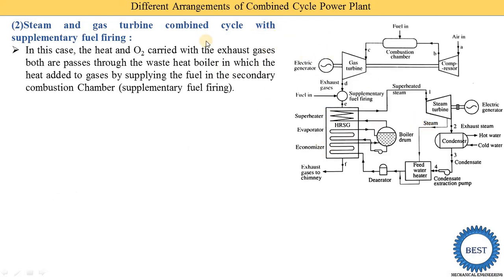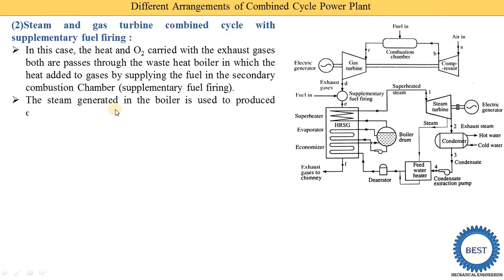As shown in this diagram, the compressor, combustion chamber, and gas turbine remain the same. We add a supplementary fuel firing system between the gas turbine power plant and the steam turbine power plant. The supplementary fuel firing increases the temperature of the exhaust gas by adding fuel to it. All other components — HRSG, steam turbines, condensers, and pump — remain the same.